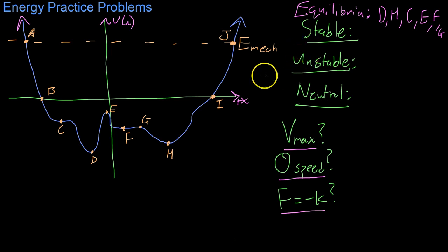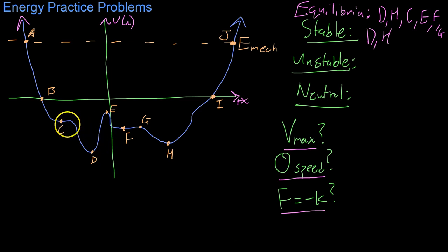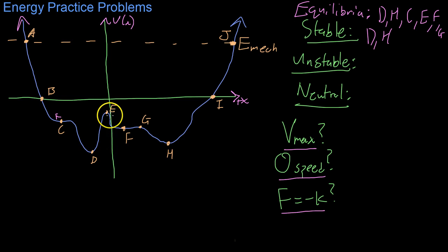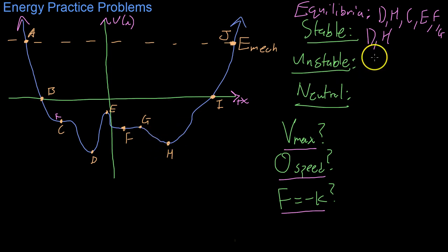Stable equilibria are points sitting in troughs: if slightly disturbed, the object returns to that point. Only d and h fit that behavior. Unstable equilibria are points where, if disturbed, the object deviates away. Point c, if nudged slightly to the left, rolls all the way into d's trough. Point e, if rolled either way, falls off and never returns. Point g is precariously perched on the edge of h's trough. So c, e, and g are all unstable equilibria.